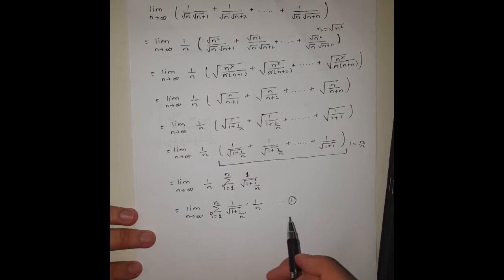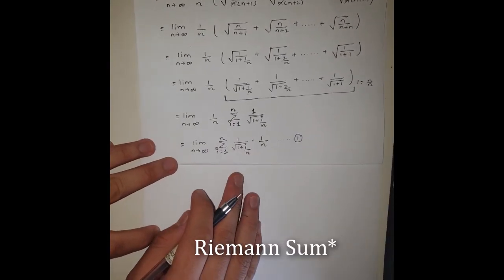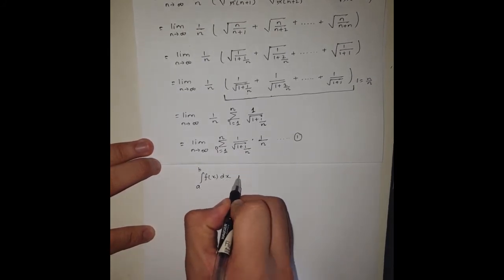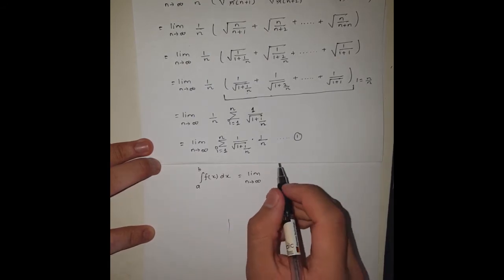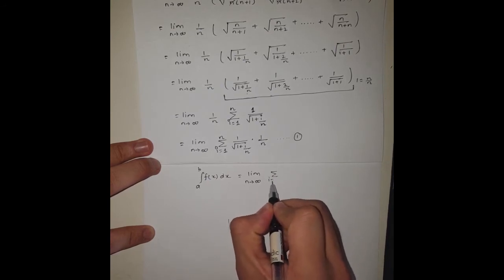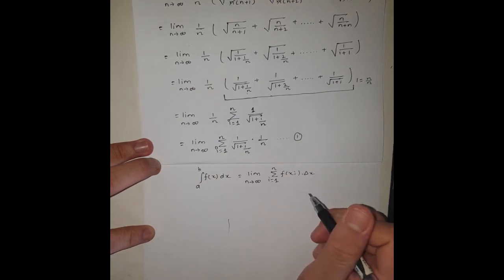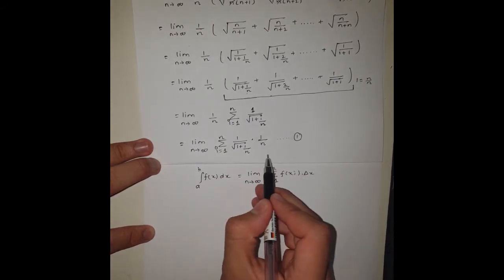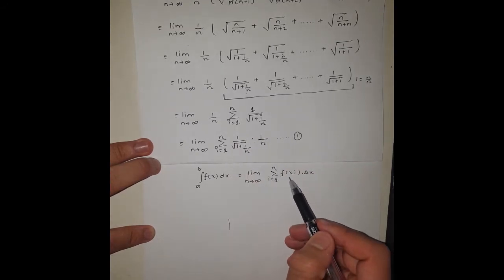Now, what we know from the theorem of the Riemann series is that the definite integral is equal to the expression of the Riemann series. Now all we need to do is compare this general form of the Riemann series with the expression that we got. By comparing, we can see that this is going to be our delta x and this is going to be our function f(x_i). I will write delta x as 1/n and f(x_i) as 1 by square root of 1 plus i/n.